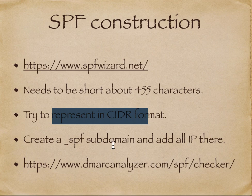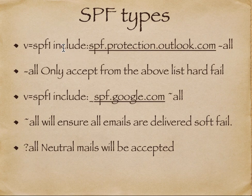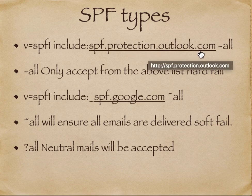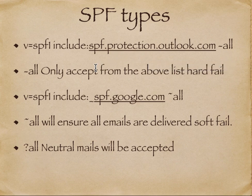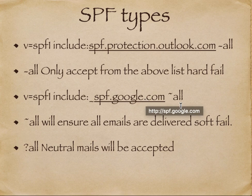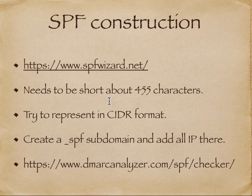By default, a receiving email server does only around 11 DNS lookups to resolve domains. For example, include:spf.protection.outlook.com could resolve to netblock1.outlook.com, netblock2.outlook.com, and netblock3.outlook.com — so those three domains each need another lookup, quickly consuming your lookup budget. SPF lookups are capped at a maximum of 11; if exceeded, the SPF check will not happen.